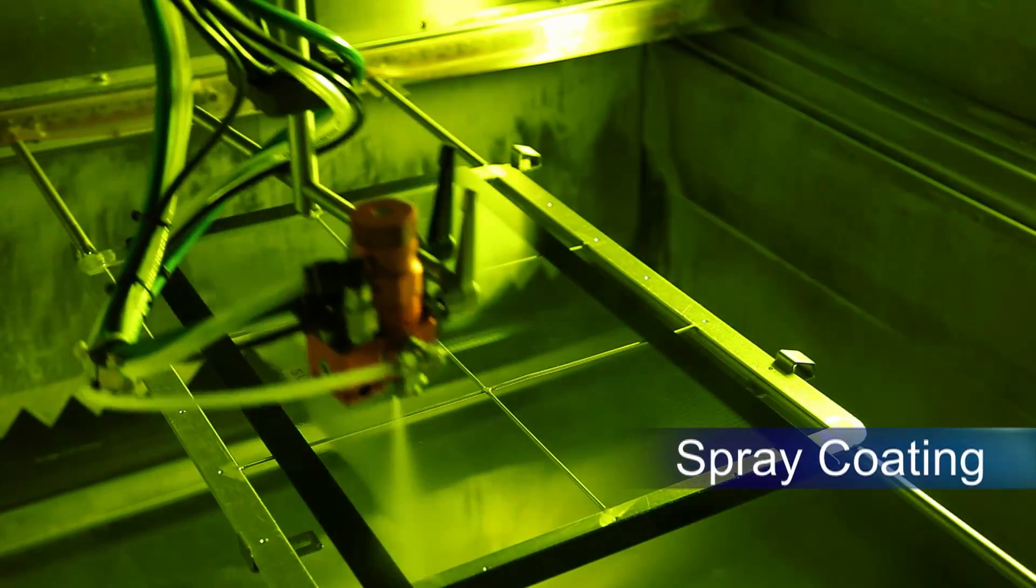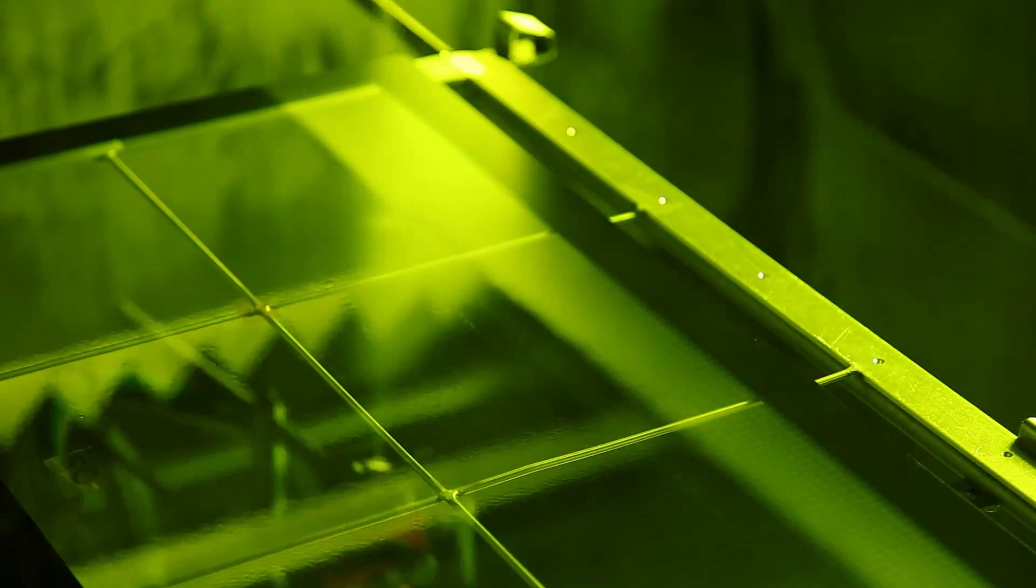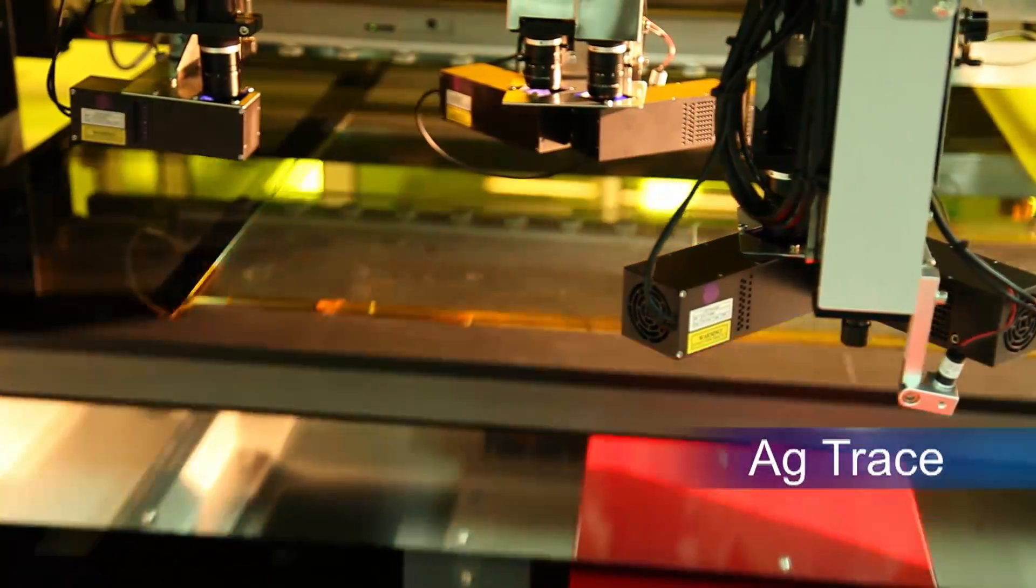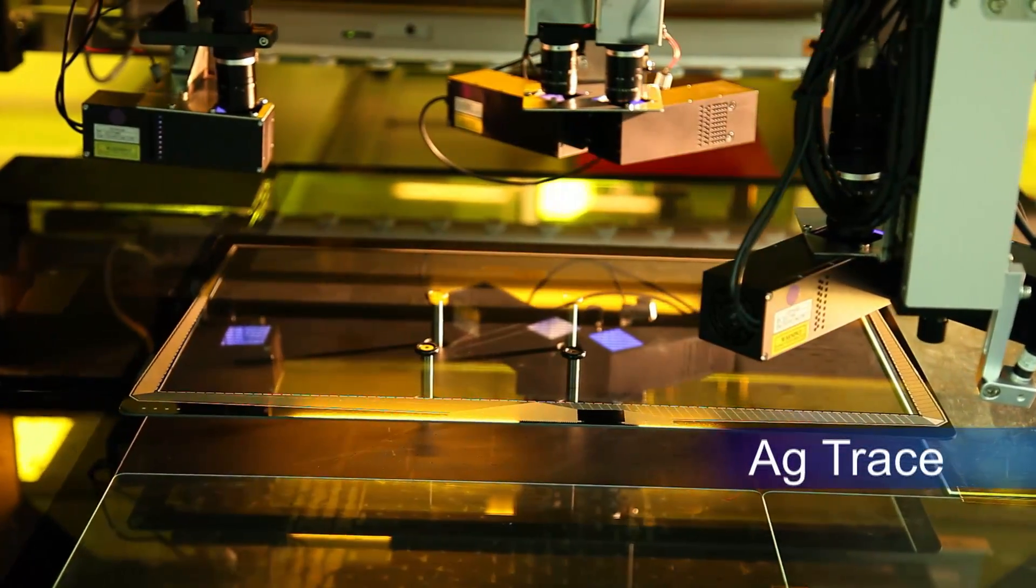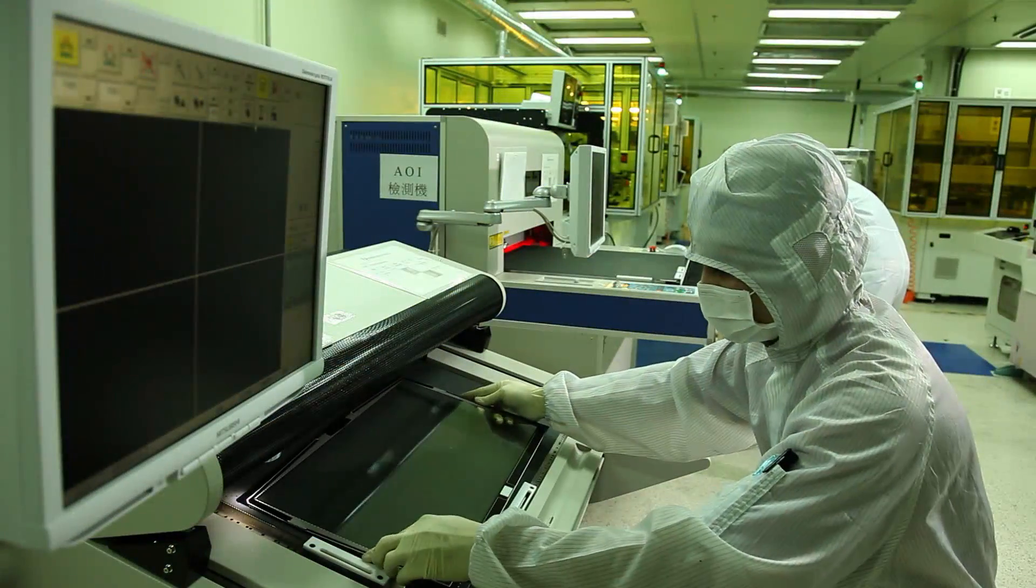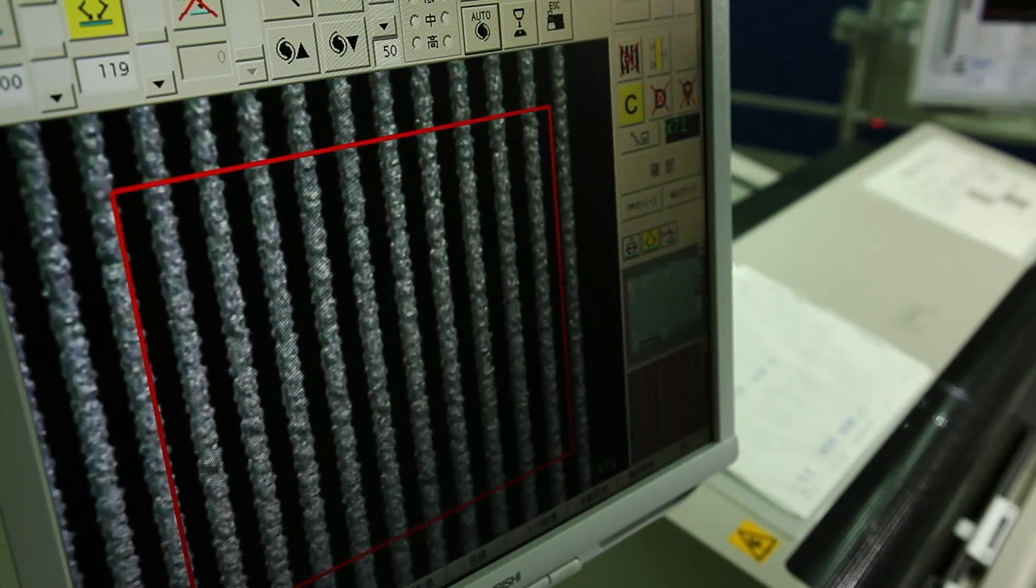An insulation layer can be sprayed onto the electrode pattern. Next is the silver conduct trace process. For narrow board bezel type, the lead wire trace width and space can be 30 by 30 micrometers.